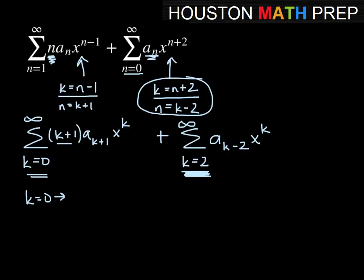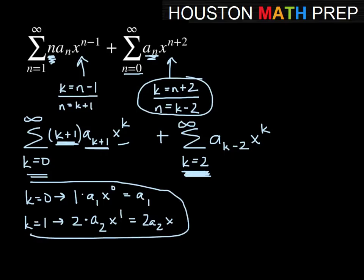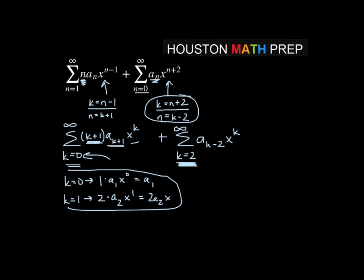At k equals 0: k plus 1 gives 1, a sub k plus 1 gives a sub 1, and x to the k is x to the 0. So that term is just a sub 1. At k equals 1: k plus 1 gives 2, a sub k plus 1 gives a sub 2, and x to the k is x to the 1. So that term is 2 a sub 2 times x. These are the two extra terms we get, and once we put those out front, we start the sum at k equals 2 where the indices match.